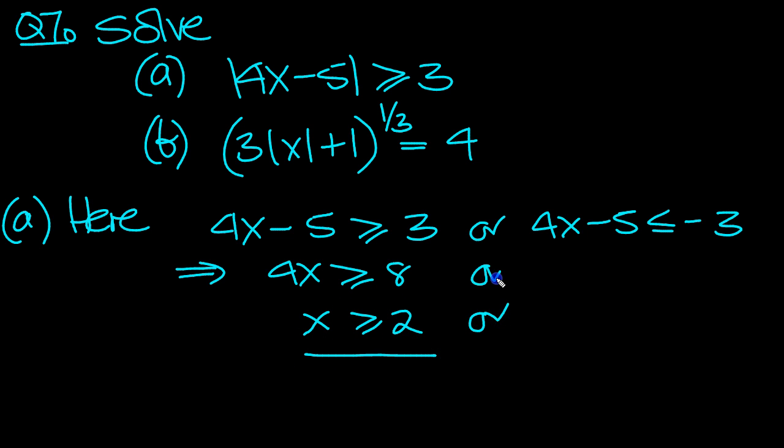Or here, 4x, move the 5 over becomes plus 5. 5 take 3 is 2, and then move the 4 from times to divide. 2 over 4 is a half, so x can be less than a half, or x is bigger than or equal to 2.